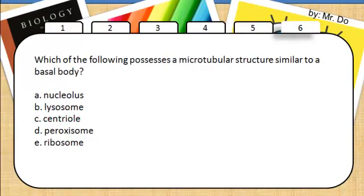Which of the following possesses a microtubular structure similar to a basal body? That would be the centriole, the thing that sends out the spindle fiber during the process of mitosis found in animal cells. In plants, it's called the microtubular organizing centre.